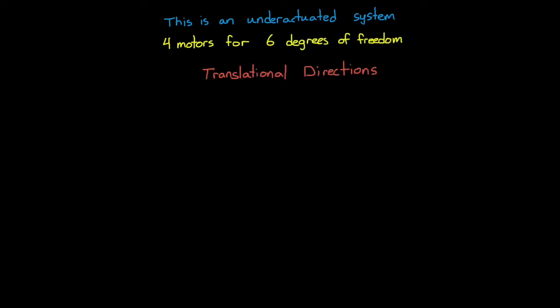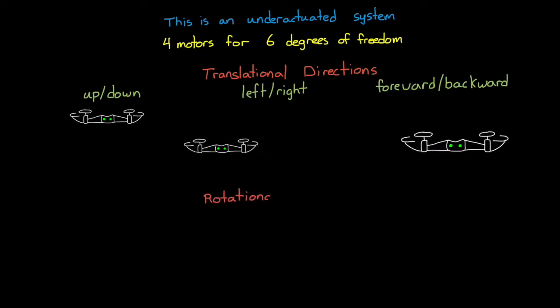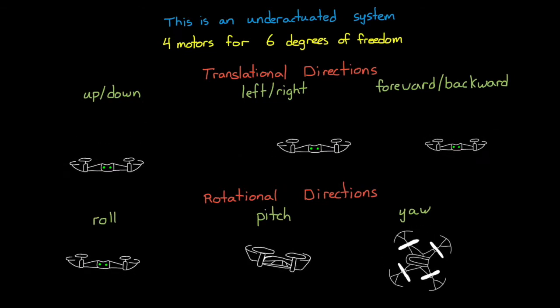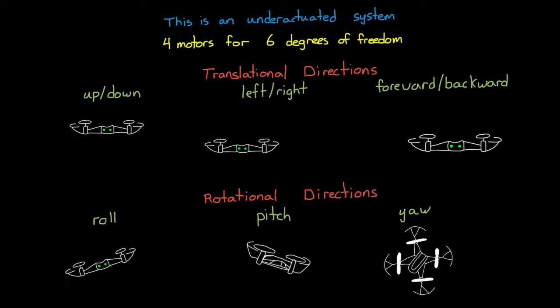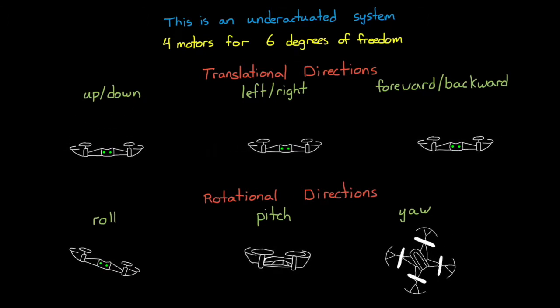The first thing we should notice is that this is an underactuated system. We only have four actuators, but we have six degrees of freedom, three translational directions, up and down, left and right, forward and backwards, and three rotational directions, roll, pitch, and yaw. And since we don't have an actuator for every motion, then we already know that some directions are uncontrollable at any given time.